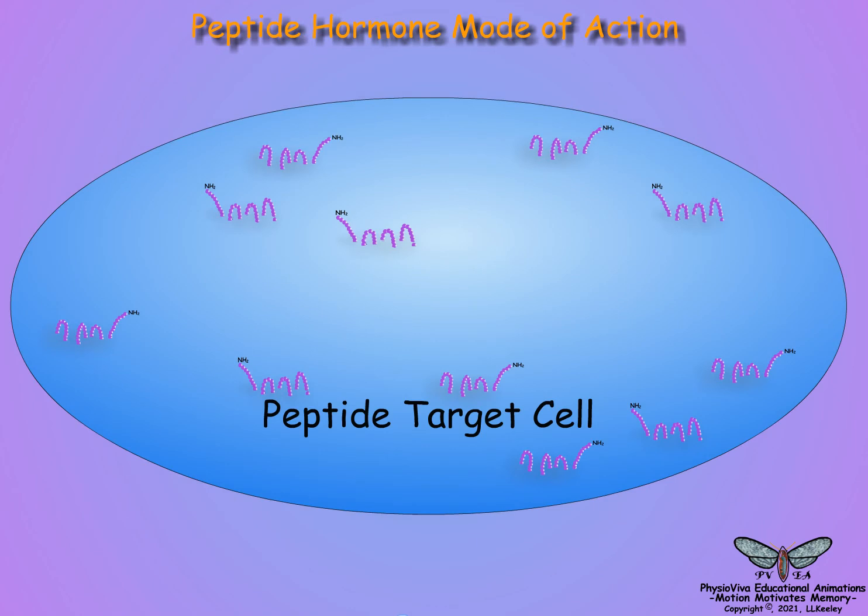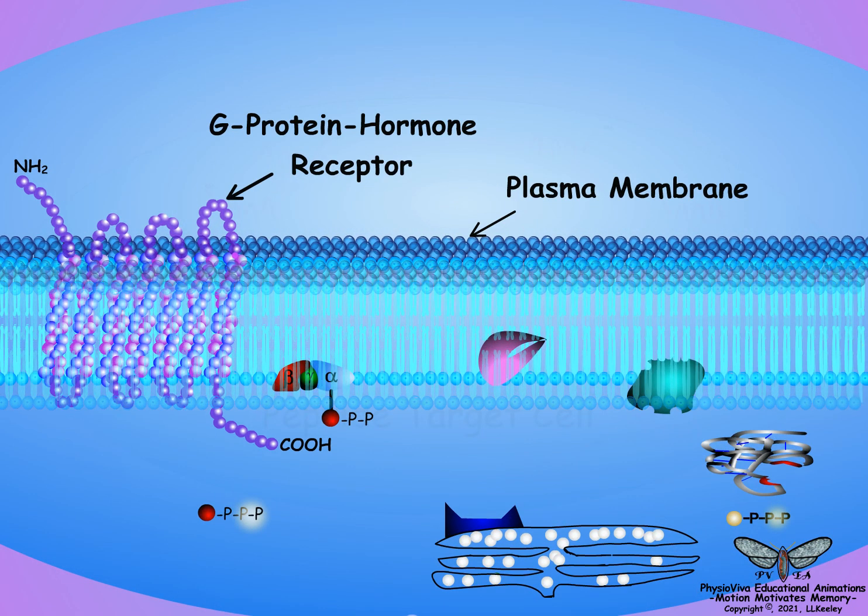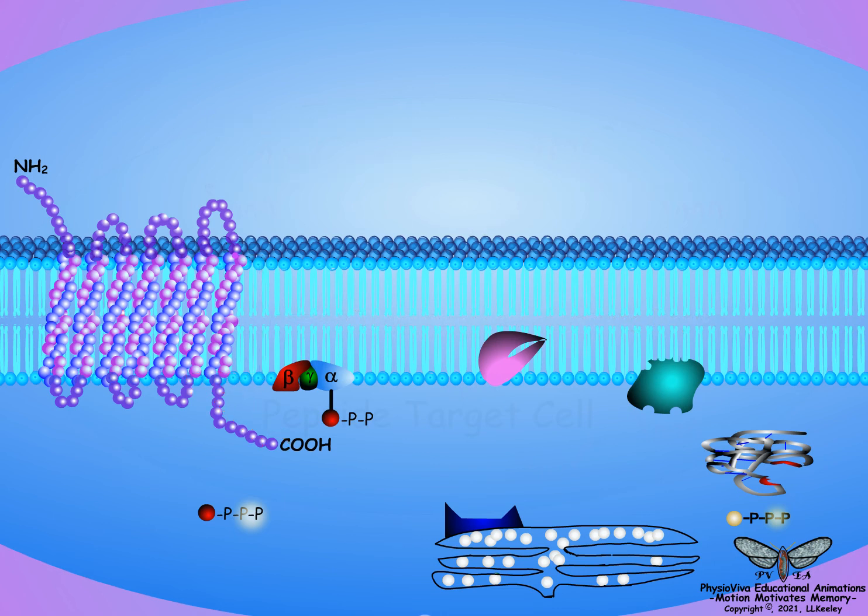In contrast, if the hormone is water-soluble, such as protein and peptide hormones, they act on the cell surface through a G protein receptor. G protein receptors are proteins consisting of seven hydrophobic transmembrane spanning regions. The receptor is associated with a G protein that is comprised of alpha, beta, and gamma subunits.